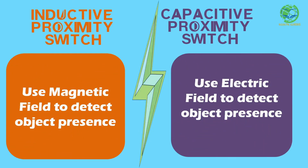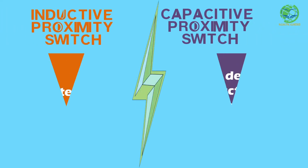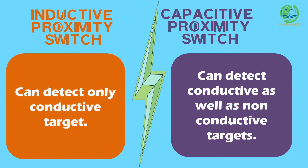Inductive sensors use a magnetic field to detect objects, while capacitive sensors use an electric field to detect the presence of any object. Inductive sensors can sense only conductive targets, so our choice gets limited to metals, while capacitive sensors can sense metals as well as non-metals.